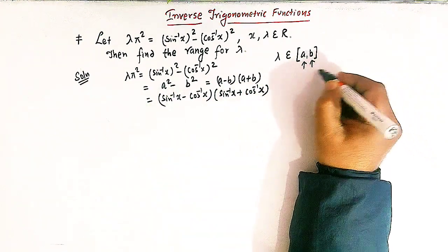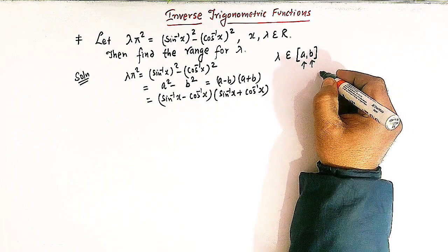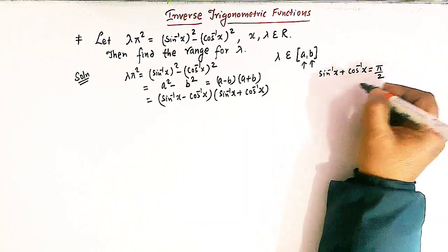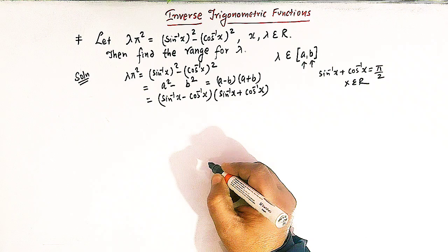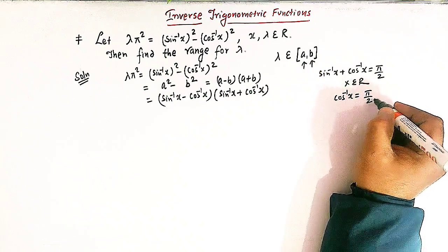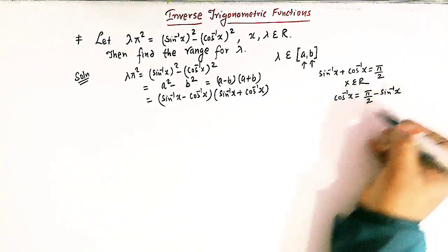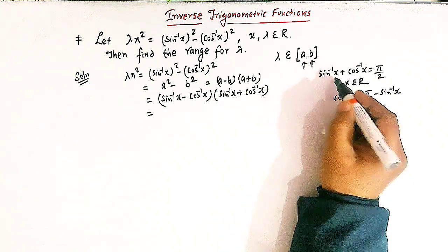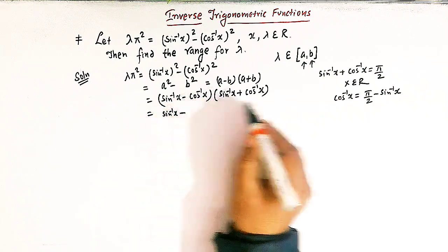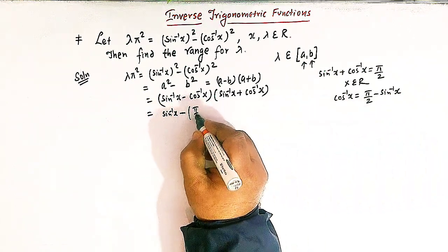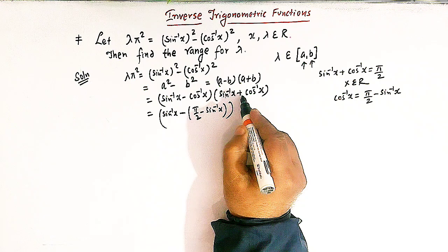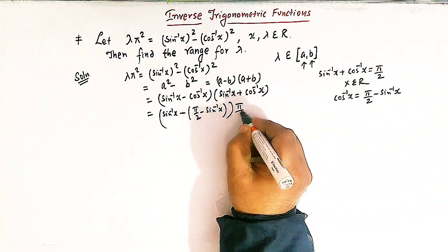From inverse trigonometric functions, we know that sin⁻¹x + cos⁻¹x = π/2 for all x belonging to the set of real numbers. Moreover, we can also write cos⁻¹x as π/2 - sin⁻¹x. Let us utilize these two expressions.